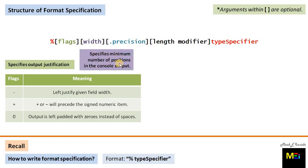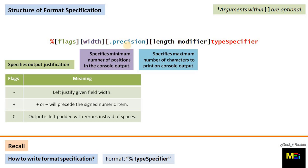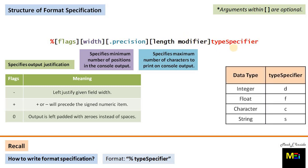The dot precision optional argument specifies the maximum number of characters to print on the console output. The length modifier is not required for now and will be discussed later as needed. The type specifier has already been discussed in many sessions, but for reference: for integer it is d, for float it is f, for character it is c, and for string it is s.